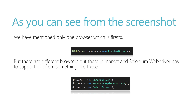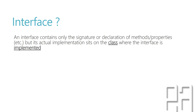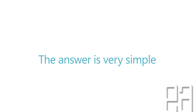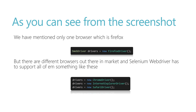Why is an interface really going to be helpful, whereas a class can also do that? An interface is something where there won't be any implementation. An interface contains only the signature or the declaration of a method or properties, but its actual implementation sits on the class where the interface is being implemented. So the actual implementation is not going to be sitting in the interface — it's going to sit on the class where it is implemented, like FirefoxDriver, ChromeDriver, or SafariDriver. Since these classes implement the interface, they are of type interface, and that's why they are still compatible.